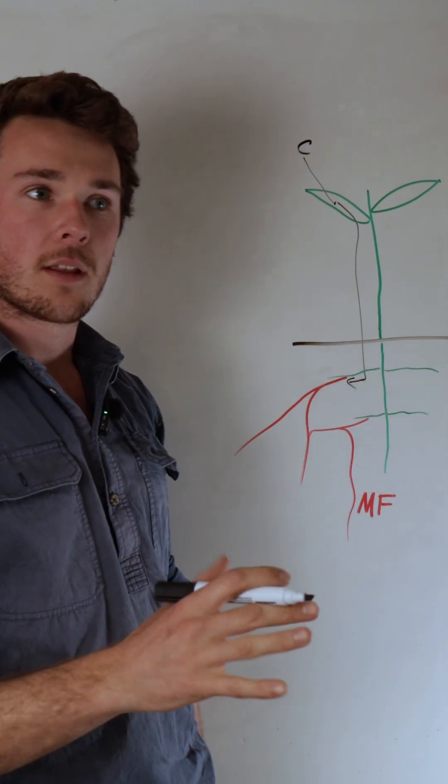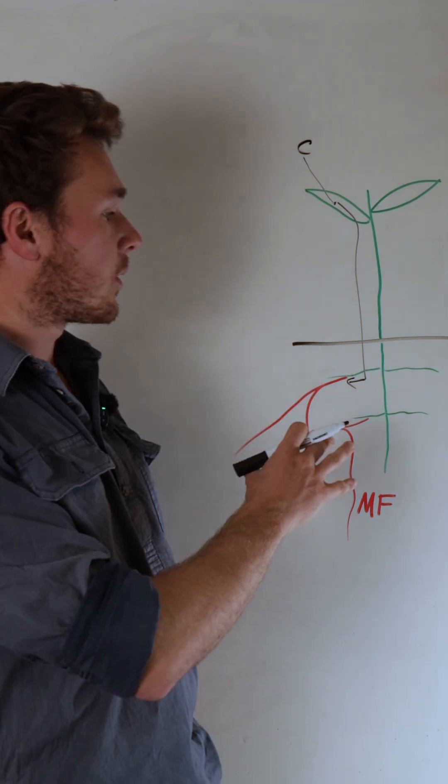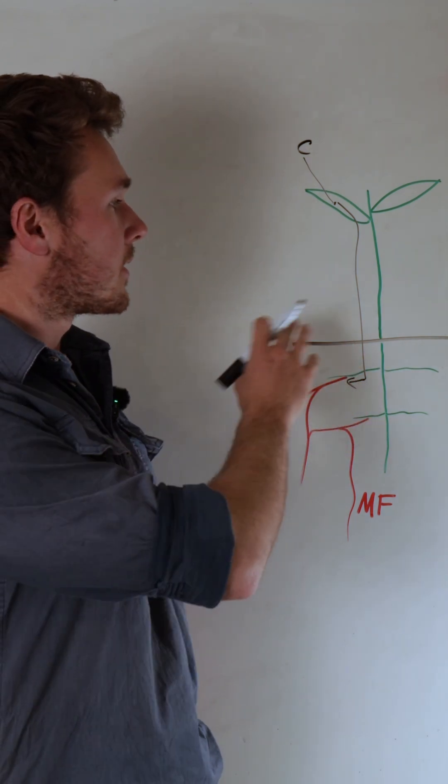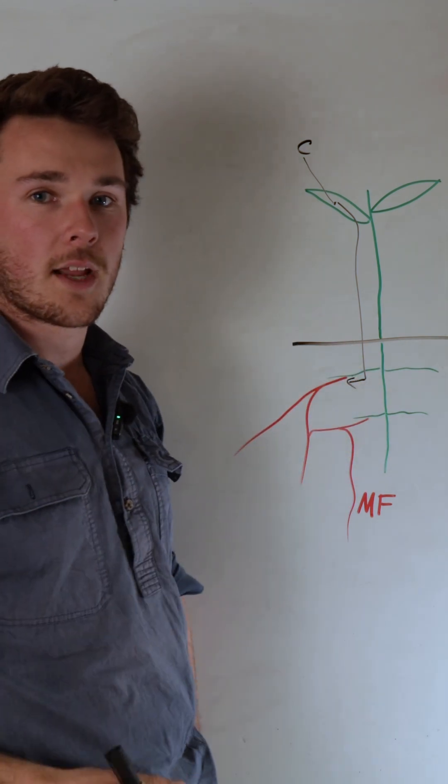So if you want to build soil organic carbon, you've got to increase the photosynthetic ability of your plant and the amount of root exudates that they produce.